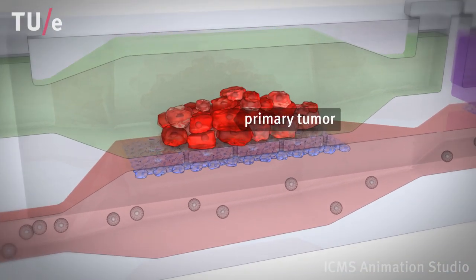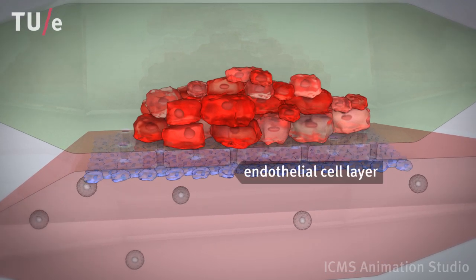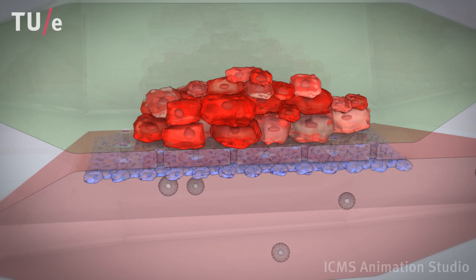The primary tumor is grown in a microchamber. This microchamber is separated by a porous membrane covered with an endothelial cell layer from a microchannel representing the bloodstream.